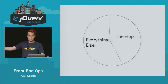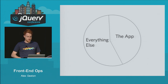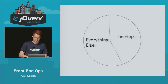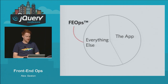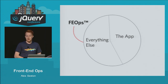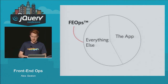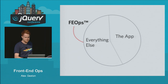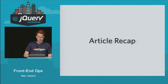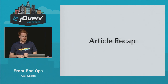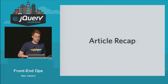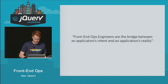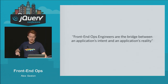So what really is it? Front-End Ops is everything except for the actual code that runs your application — your build tools, your testing, your monitoring, your documentation. It's literally everything except the code that runs on the client. Front-End Ops engineers are the bridge between an application's intent and an application's reality.